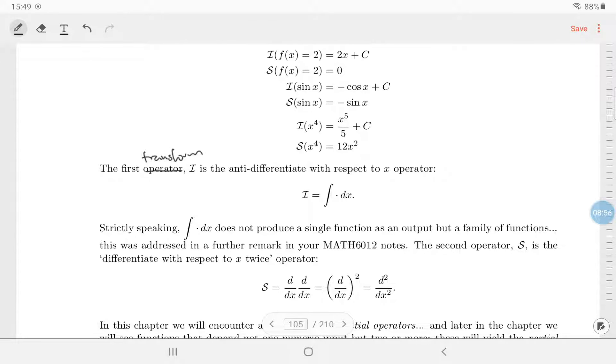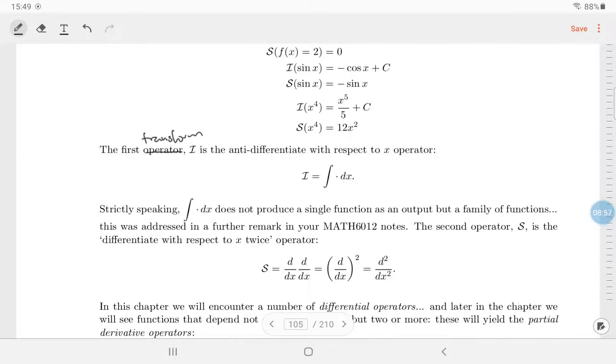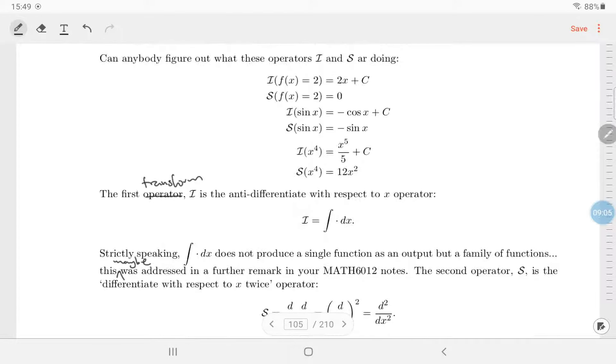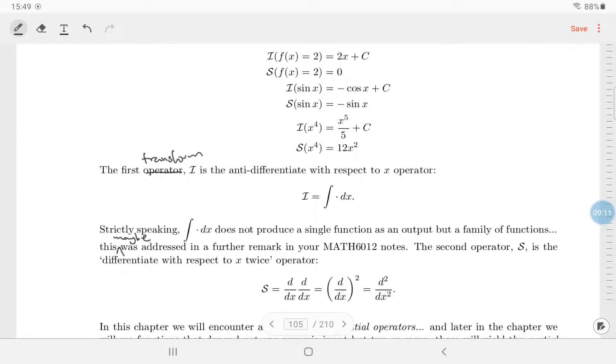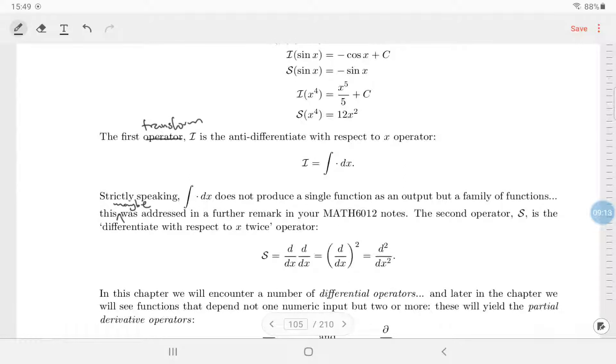The first operator or transform is the anti-differentiated with respect to x. Now it doesn't produce a single function, but we don't have to complicate it here. And the second operator S, a second transform, is differentiate with respect to x twice.